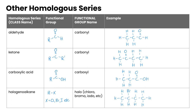The next series is aldehydes. Aldehydes have a functional group where a carbon is double-bonded to an oxygen, which is then attached to a hydrogen, with the other side connected to some sort of alkyl group. This is called a carbonyl, and you can see in this example that at the very end is our aldehyde.